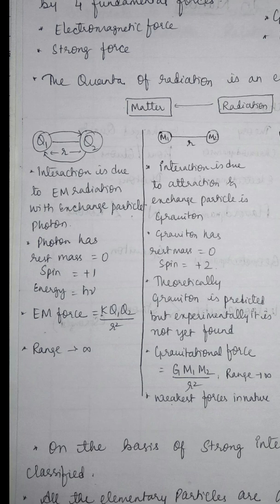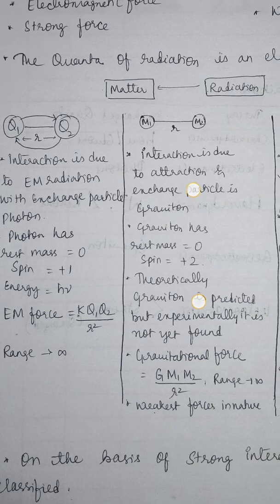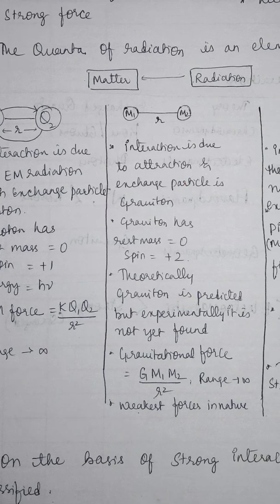The electromagnetic force acts between two charged particles q1 and q2 separated by distance r. The exchange particle for electromagnetic force is the photon. The photon has rest mass zero, spin of plus one, and energy equal to hν. The electromagnetic force is given by Coulomb's law: F = kq1q2 / r². Its range is infinity, so it is called a long-range force.